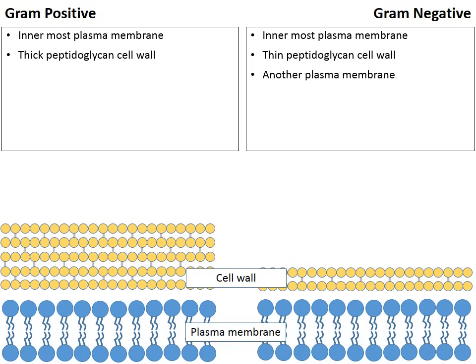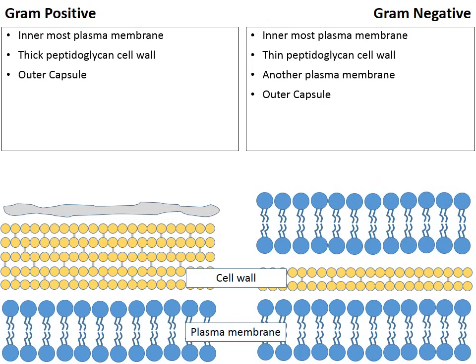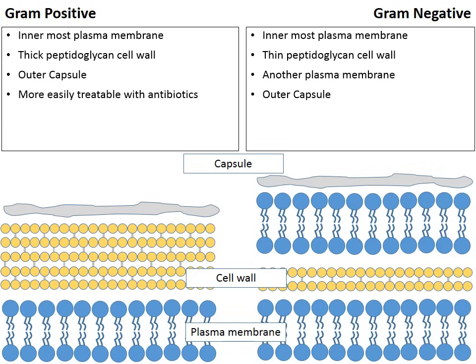Gram-negative bacteria also have an additional outer phospholipid bilayer — an additional outer membrane. Then we have the third layer, the capsule, the sticky outer layer, present in both gram-positive and gram-negative bacteria. Gram-positive bacteria are more easily treatable with antibiotics simply because gram-positive lack that second outer phospholipid bilayer. Therefore, gram-negative bacteria are harder to treat with antibiotics, simply because it's harder for the antibiotic to gain entrance into the bacteria cell.